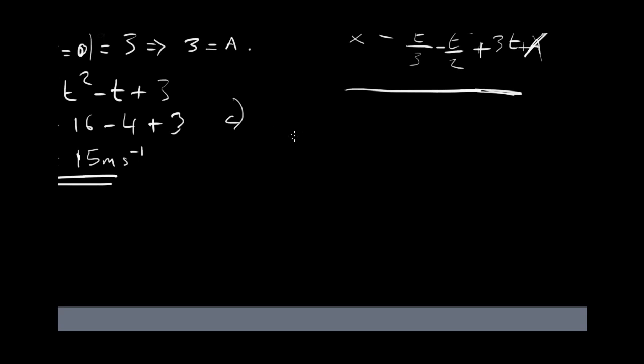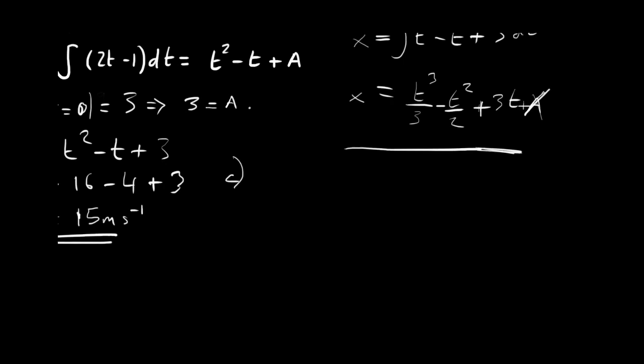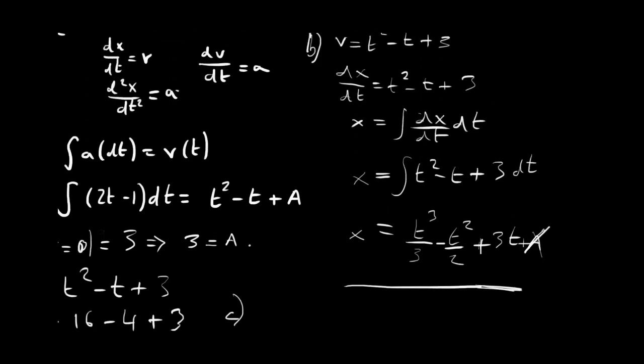So here we have two options really. We can either put in the t equals 1 and the t equals 3 in here, which is our expression for x in terms of t. And if we put in 3 and then we put in 1 and we subtract those two, then we get how much distance it travelled in between 1 second and 3 seconds. But the way that I'd like to do it, which I think would be a bit more insightful in terms of the learning, would be to use the expression for velocity.